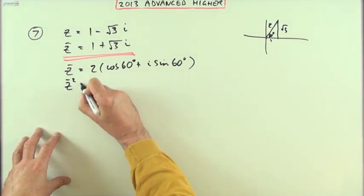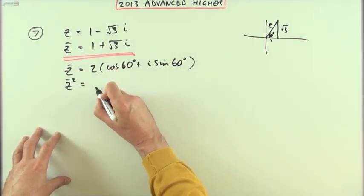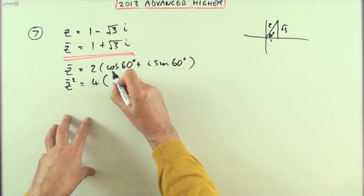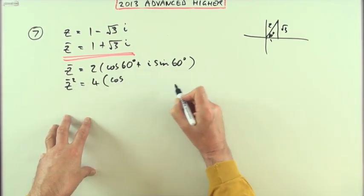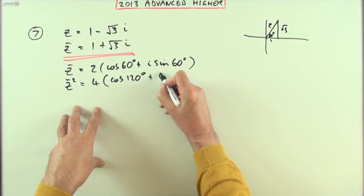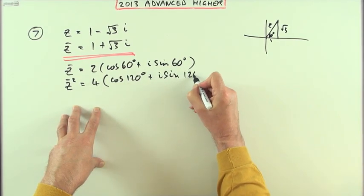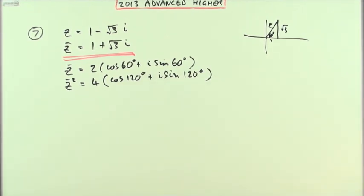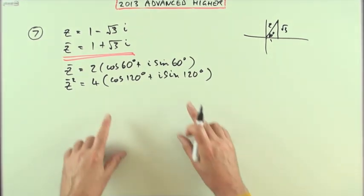And then the square of it will simply be this squared. So the two squared which will become four, and that squared would double the angles which would make it 120° plus i sine 120°, presuming we can have it in degrees here.